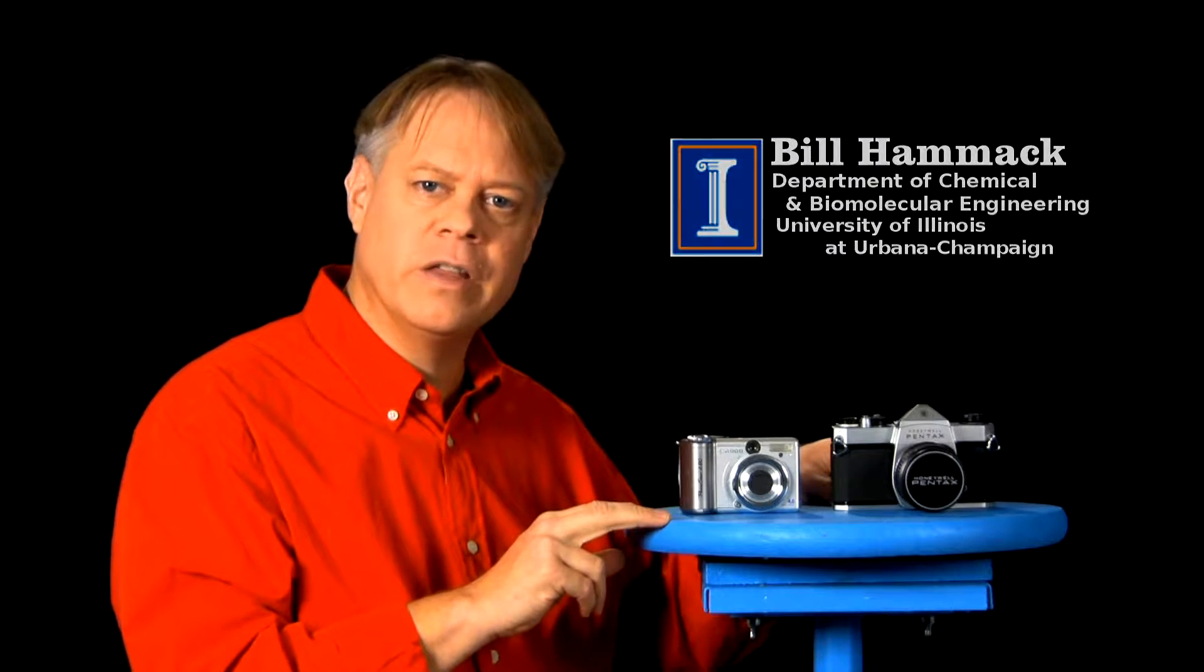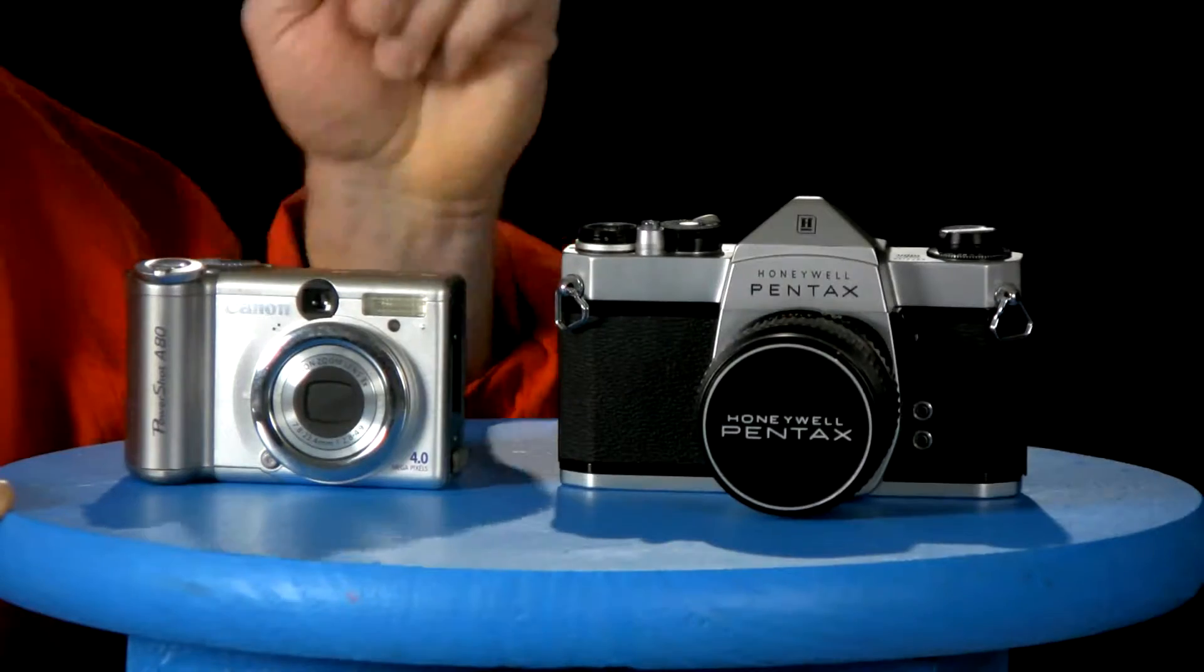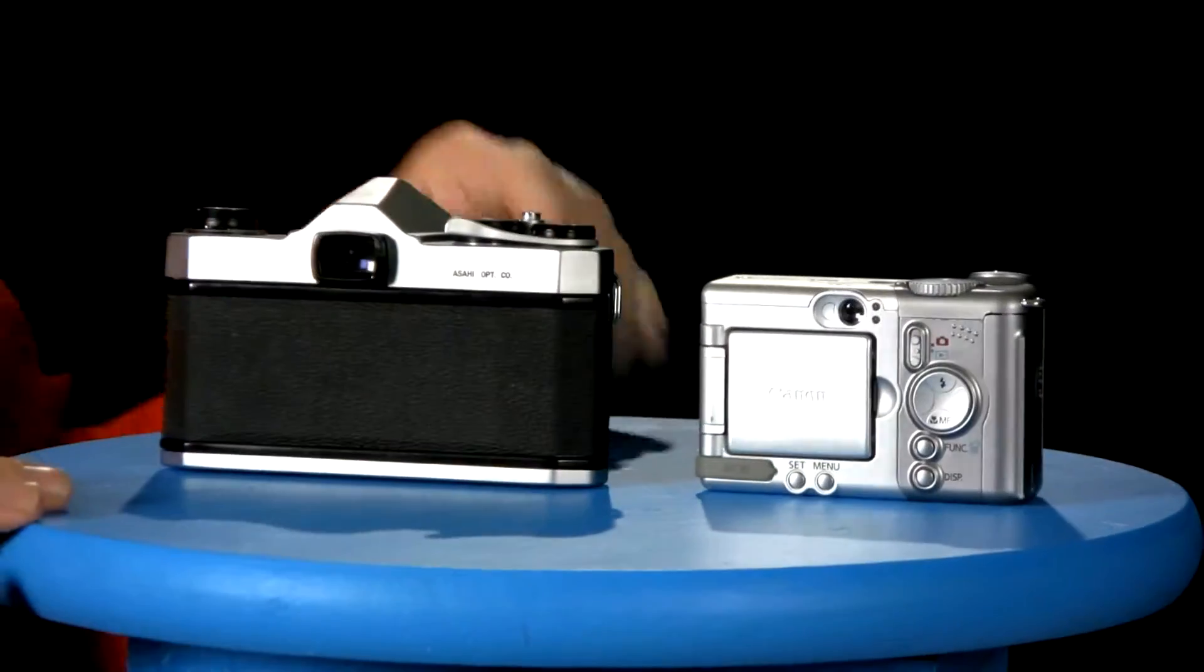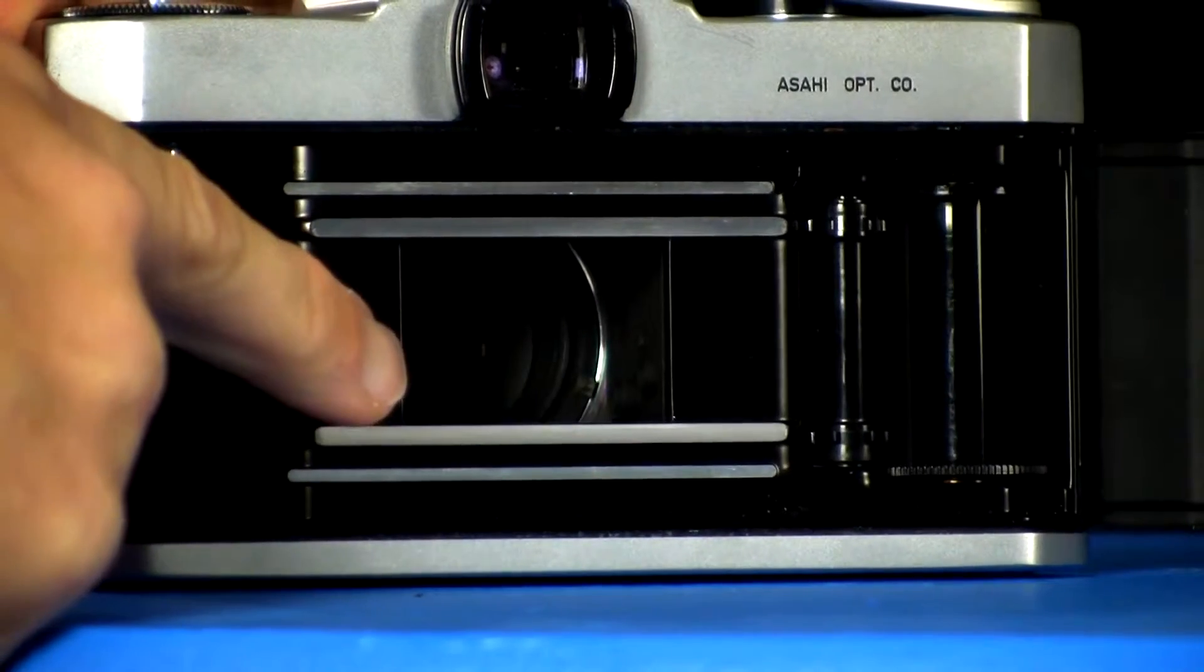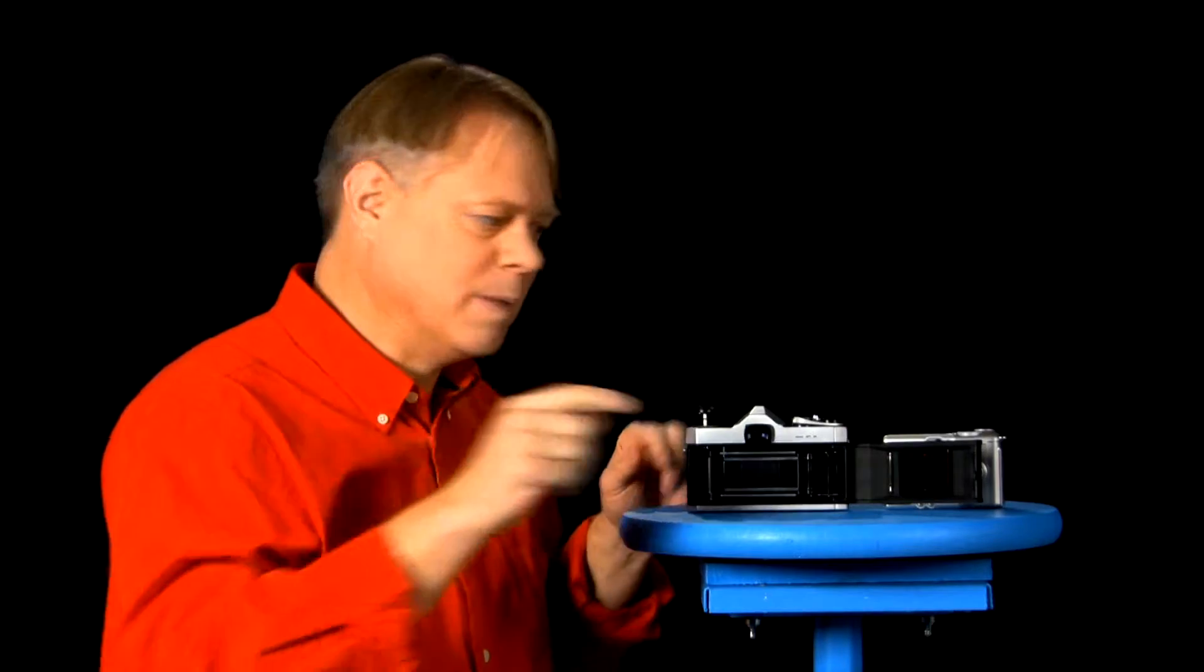Photographic technology has changed a lot in the last century. Digital photography became cheap and convenient because of the CCD, the charge coupled device inside this camera. In the past, we just placed a piece of film here behind the lens, but now we have a purely electronic imager to do all the work. Let me show you.